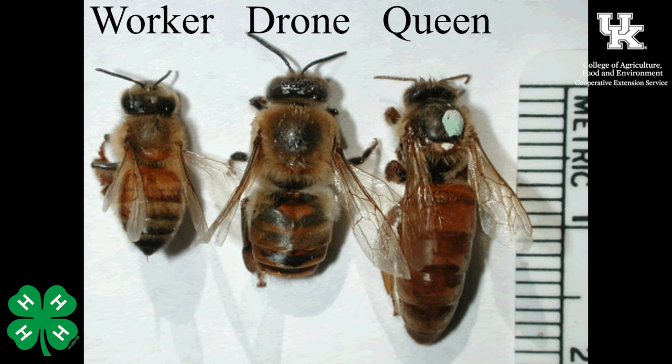The drones are all male. One thing about the worker bee — they do have a stinger. As you may know from past experience, if you get stung by a worker bee, they'll actually die. When they pull away, the stinger actually pulls out and it disembowels them. They can only sting once and then they die.